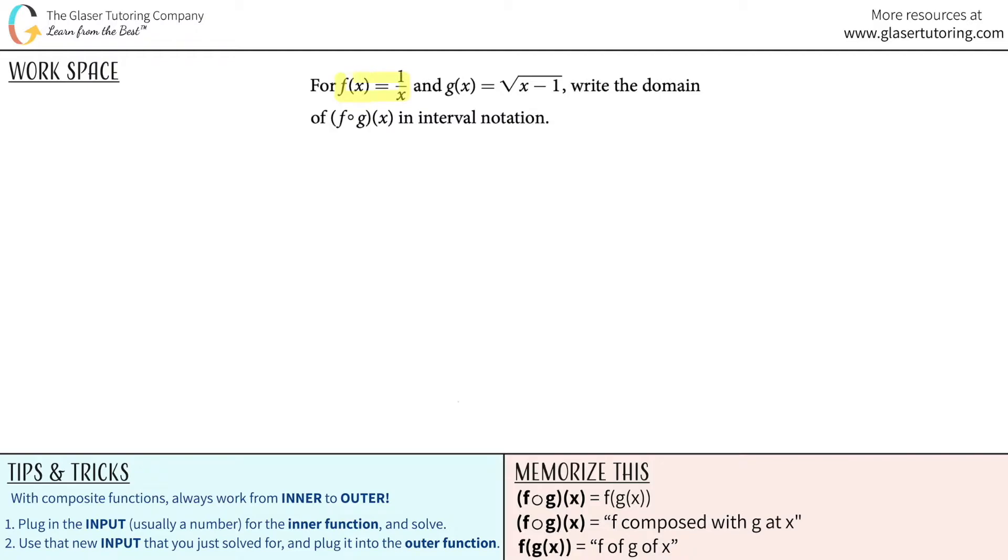For f of x equals 1 over x and g of x equals the square root of x minus 1, we need to write the domain of f composed with g at x in interval notation.